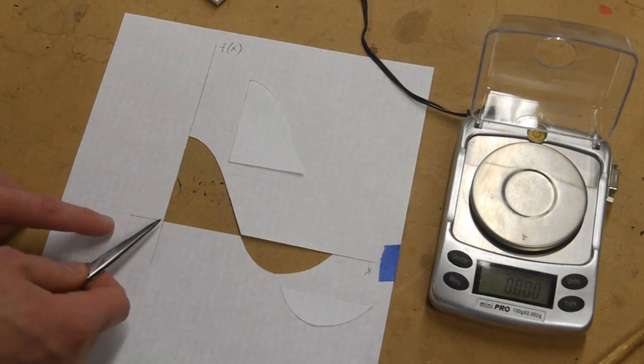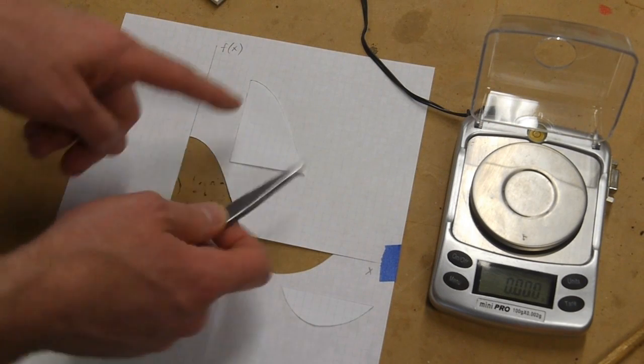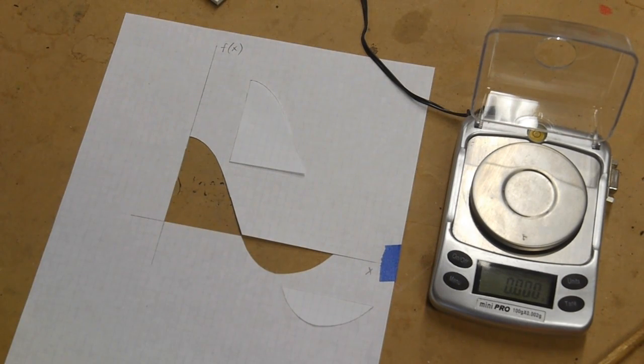Likewise, if we had two functions and we wanted to find the area between them, we could just plot both of them out and then cut out the area that we wanted between them. So this technique is very powerful because even if we don't have a mathematical formula for our data, we can still connect all the points with lines and integrate them.